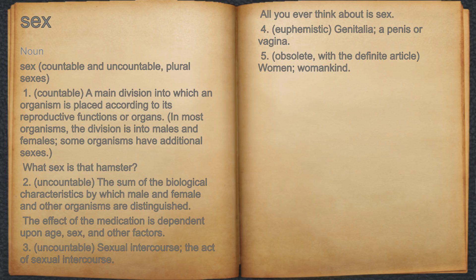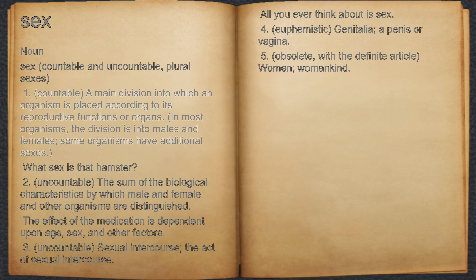Sex. Noun 1. Countable: a main division into which an organism is placed according to its reproductive functions or organs. In most organisms, the division is into males and females; some organisms have additional sexes. For example: What sex is that hamster?